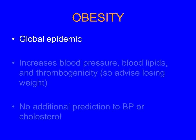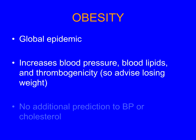Once you develop obesity, your blood pressure goes up, your blood lipids become adverse, and you become more thrombogenic. If you look at epidemiological studies of coagulation activation, they go up with weight. So you advise everybody to lose weight. But interestingly, if you look at data from the emerging risk factors collaboration, obesity doesn't add much incremental prediction over blood pressure and cholesterol.